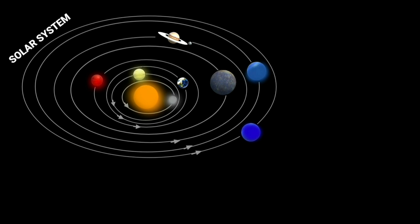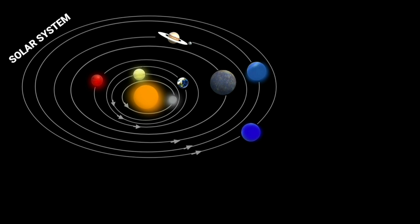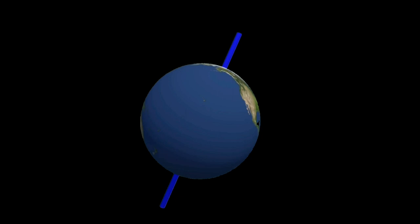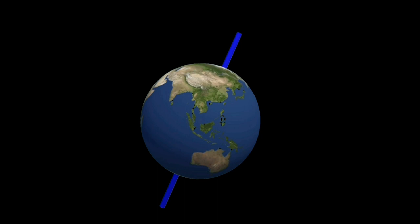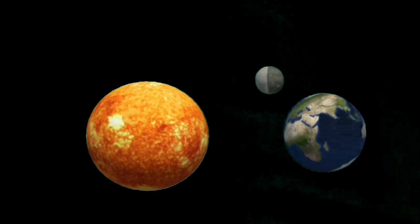a planet also rotates on its own axis. The time taken by a planet to complete one rotation is called its period of rotation. We use the term satellite for the bodies revolving around planets. Moon is a satellite of the Earth.